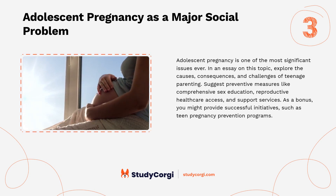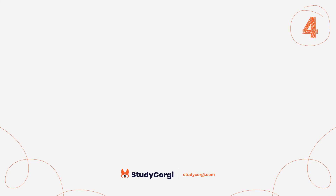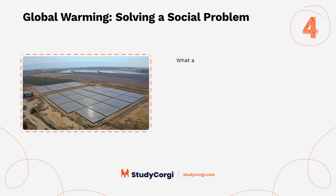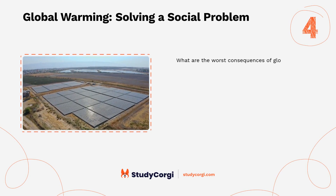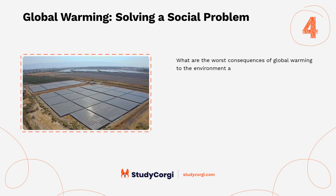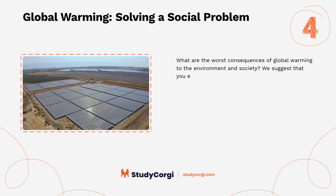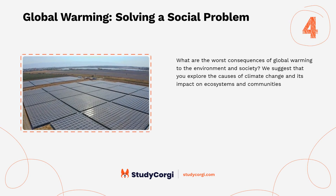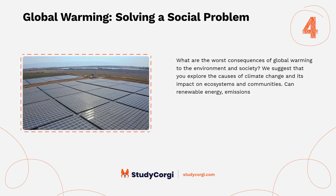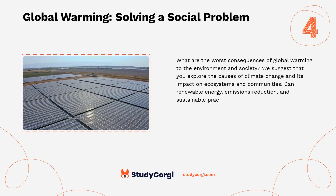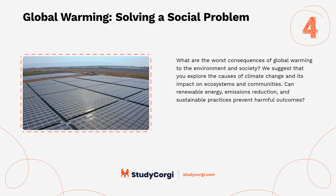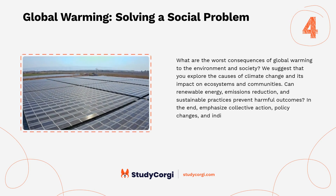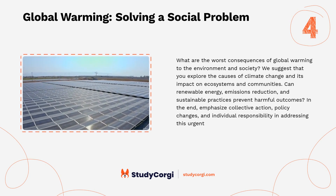Global warming: solving a social problem. What are the worst consequences of global warming to the environment and society? We suggest that you explore the causes of climate change and its impact on ecosystems and communities. Can renewable energy, emissions reduction, and sustainable practices prevent harmful outcomes? In the end, emphasize collective action, policy changes, and individual responsibility in addressing this urgent problem.